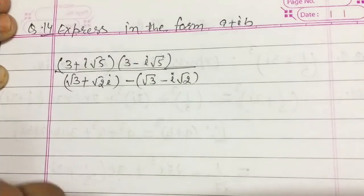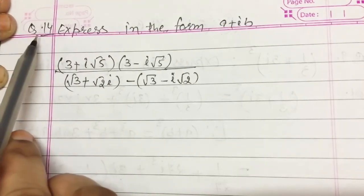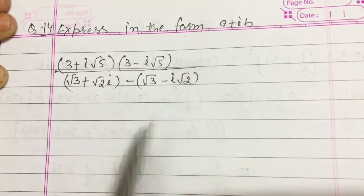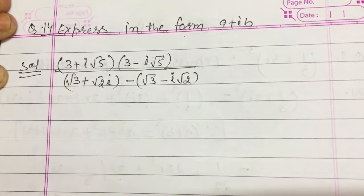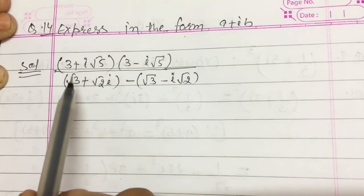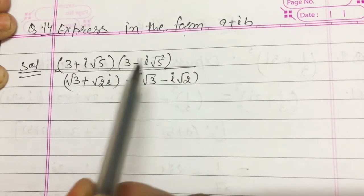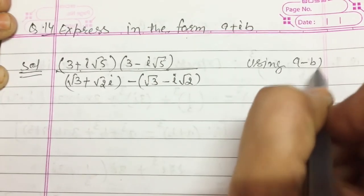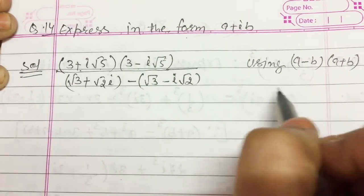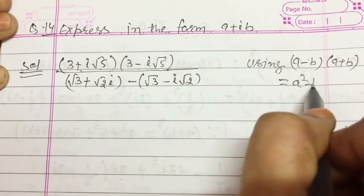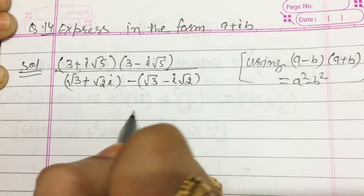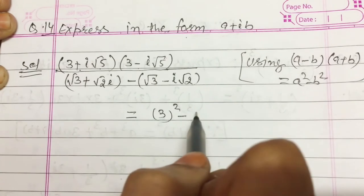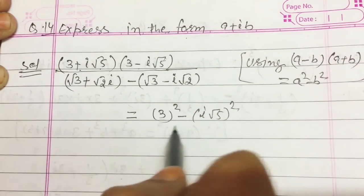Now the last question of this exercise — question number 14: express in the form a + ib. For this question, the numerator is in the (a + b)(a − b) form, so using the identity (a − b)(a + b) = a² − b². In the numerator you will get 3² minus (i√5)².